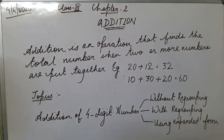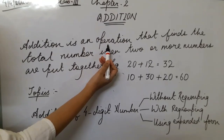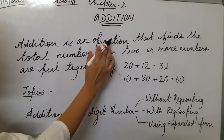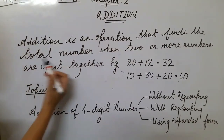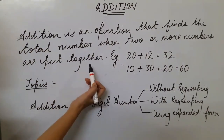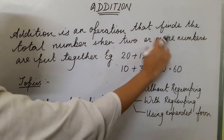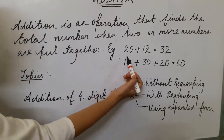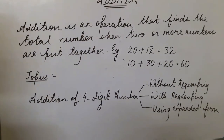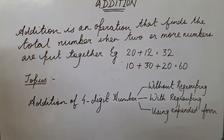So let's start with the definition. Addition is an operation — just like subtraction, multiplication, division — it is an operation that finds the total number when 2 or more numbers are put together. You need to have at least 2, or it could be more than 2. For example, 20 plus 12 gives you 32, and 10 plus 30 plus 20 gives you 60.